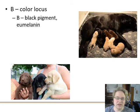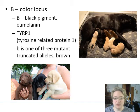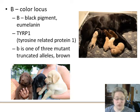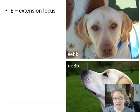The B gene determines what type of eumelanin is produced. The dominant allele produces a super dark black color — it's related to a tyrosine protein, similar to the cat point color. The mutant lowercase b allele is a truncated allele that doesn't fully produce the protein needed to convert the precursor of eumelanin into eumelanin, giving a brown color instead of black at this color locus.